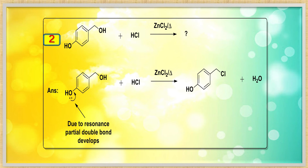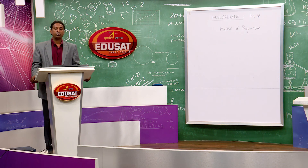Question 2: a benzene ring system with two OH groups — one attached directly to the ring and one on a CH2 group outside the ring. When using ZnCl2/HCl, only the CH2-OH group is replaced (giving CH2Cl) because the OH directly attached to the ring is stabilized by resonance and forms a partial double bond, so it cannot be removed.